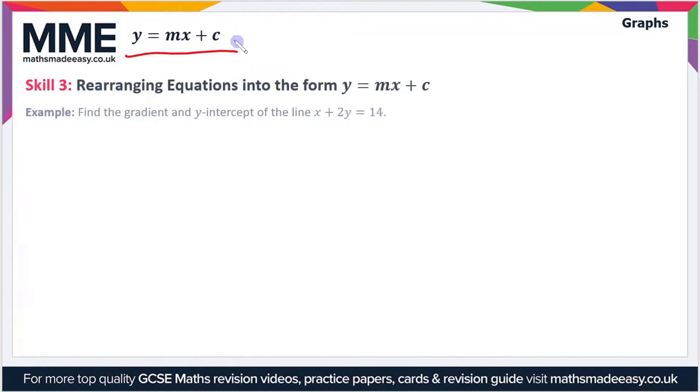This is really an algebra skill rather than a graph skill, but let's break it down. In this example, we have to find the gradient and the y-intercept of the line x plus 2y equals 14. Let's rewrite the expression: x plus 2y equals 14.